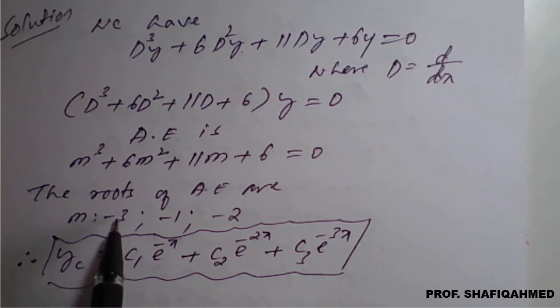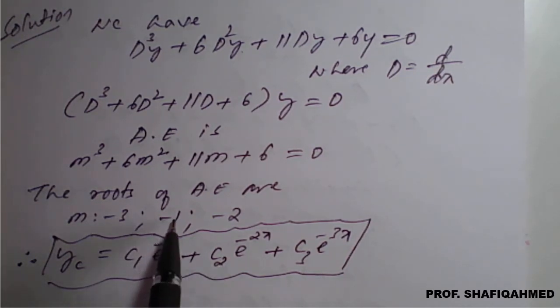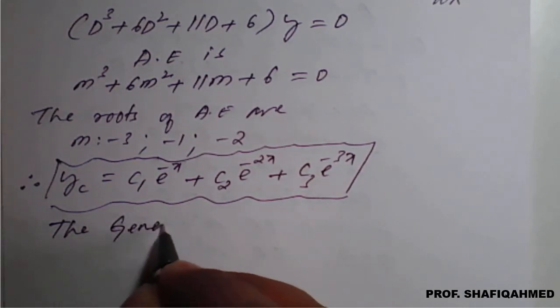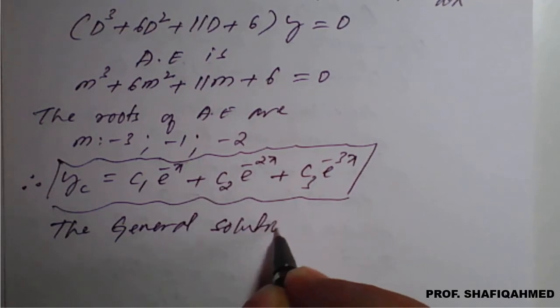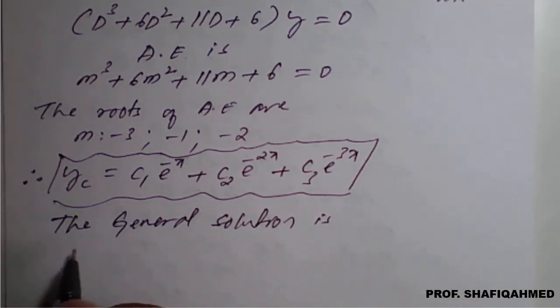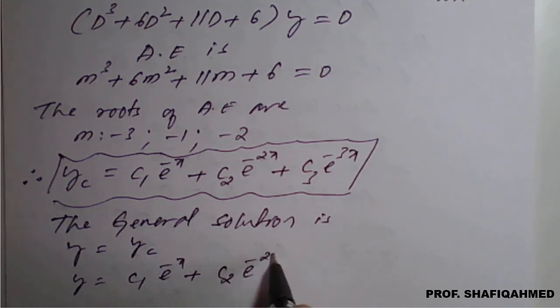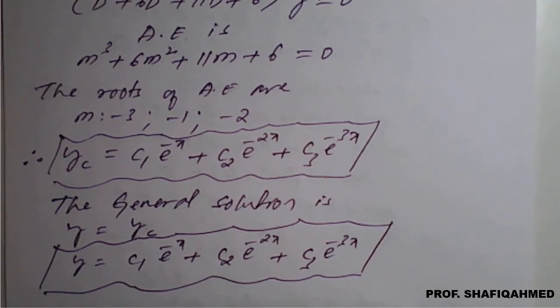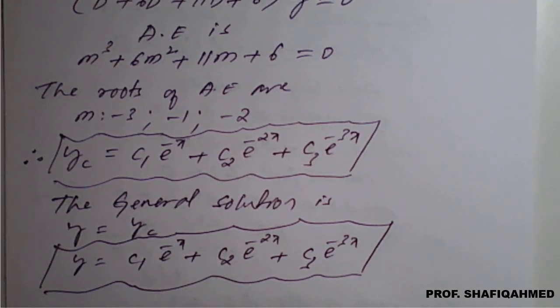If you want to write c₁e^(-3x), no problem, plus c₂e^(-x), then c₃e^(-2x) also, no problem. I have just taken in order minus 1, minus 2, minus 3. Therefore, the general solution is y equals yc, which is nothing but y equals c₁e^(-x) plus c₂e^(-2x) plus c₃e^(-3x). This is the required solution of given homogeneous differential equation.